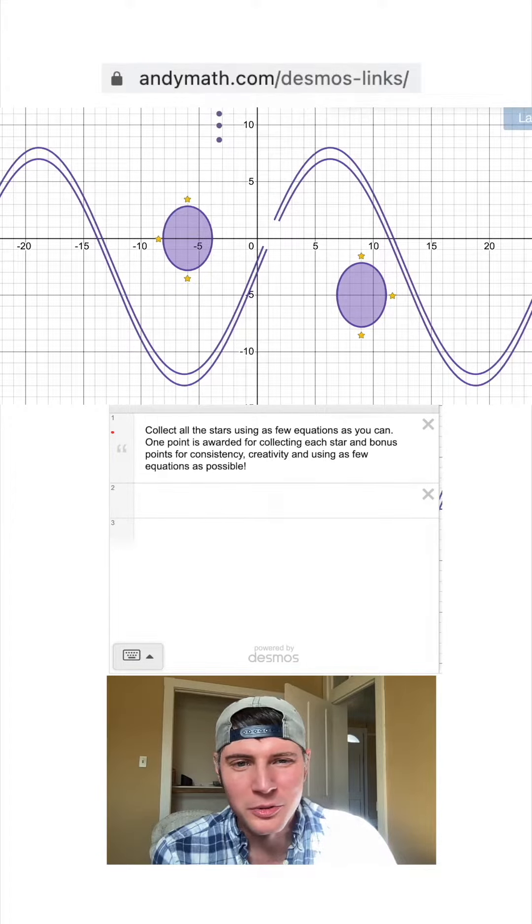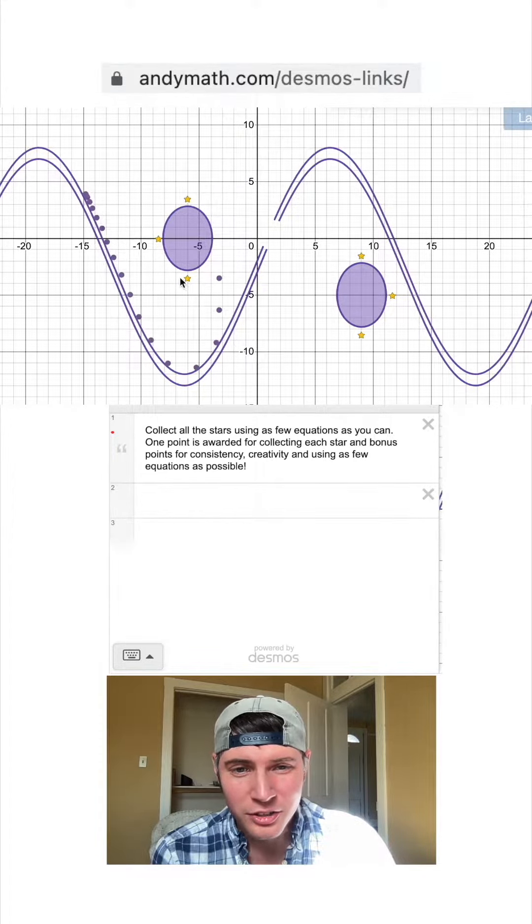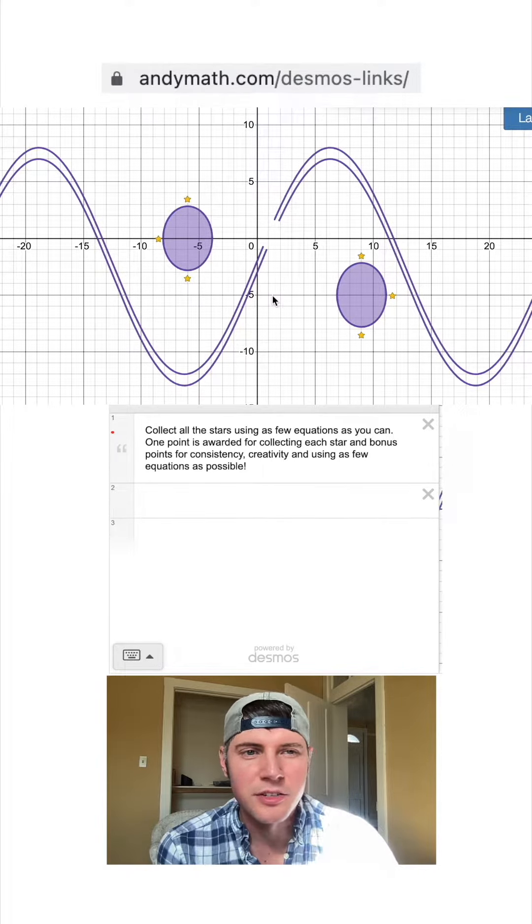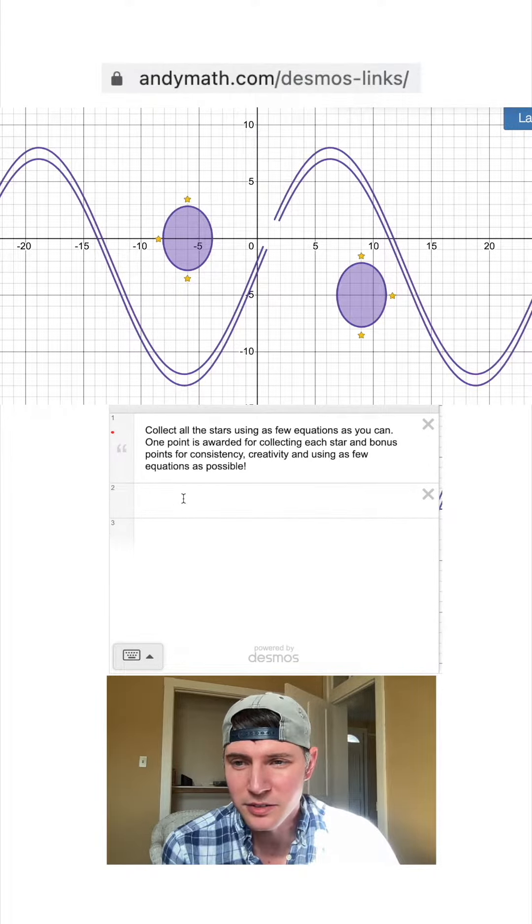Here's challenge 34. If I launch the marbles, they go right here. Our goal is to get all these stars with the marbles. The stars are just outside of these two ellipses, so let's find the equations of these ellipses.